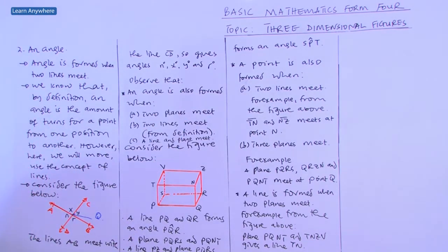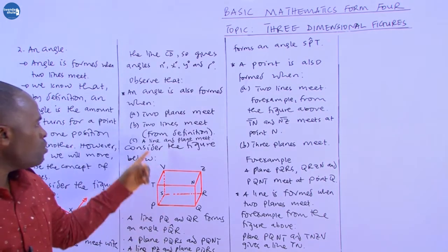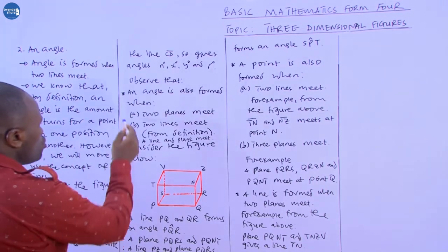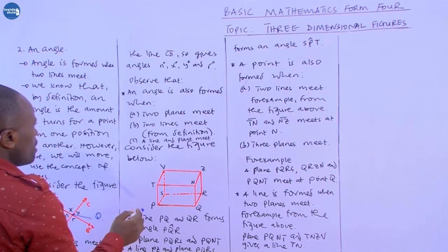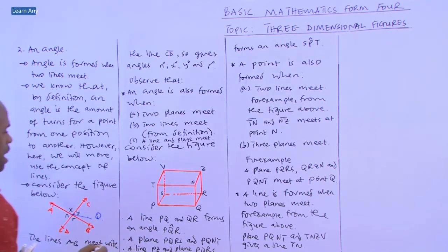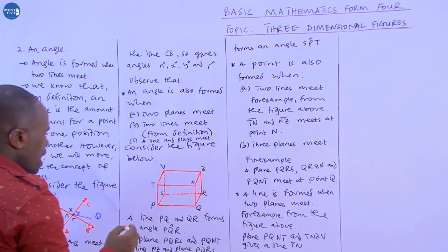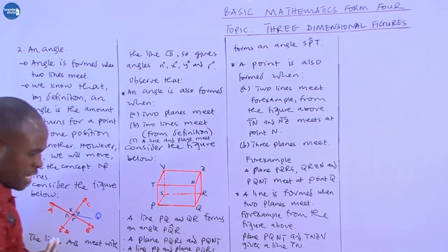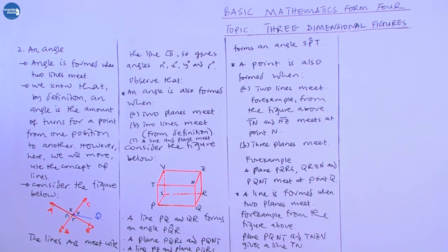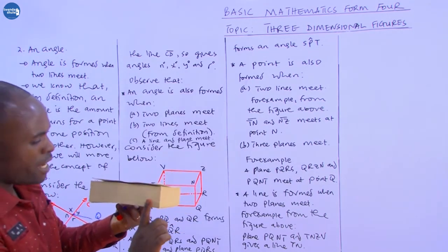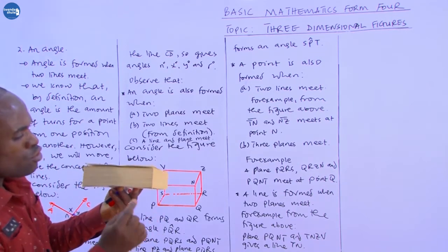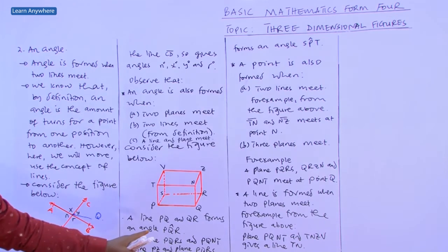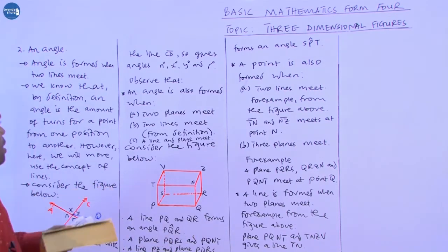With three-dimensional figures, there are also situations in which an angle is formed. An angle is formed when two lines meet — for example, from a 3D figure, edge PQ meets edge QR, forming an angle of 90 degrees, which is angle PQR.